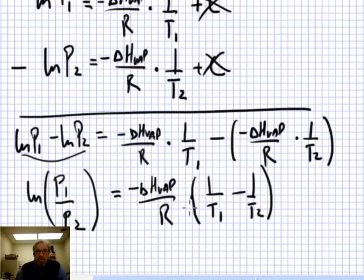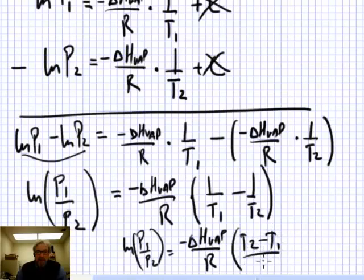So that's the two-point form of the Clausius-Clapeyron equation. Or sometimes it's written this way: natural log of P1 over P2 equals minus delta HVAP over r times T2 minus T1 over T1 times T2. Either one of these equations might be more useful in different circumstances, but that's the two-point form of this law.